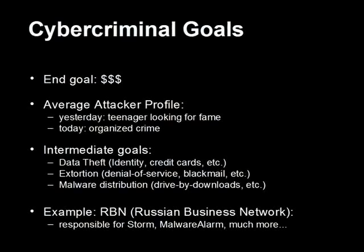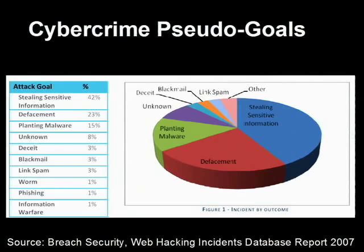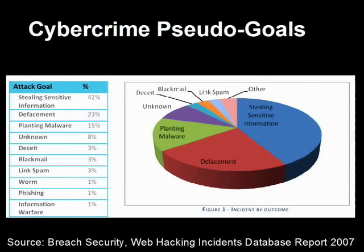This is a graph from a web hacking incidents database report done by Breach Security, looking at a whole bunch of organizations over the course of 2007. What the bad guys were mainly trying to do is steal sensitive information like credit card numbers and identity information. Once they steal that, they can use credit card numbers by burning them onto blank mag stripes and handing those to mules who go to ATMs for cash advances, or they simply sell the information on the black market. On the underground market, a credit card number might be worth around $10 each and they can be bought and sold in bulk.